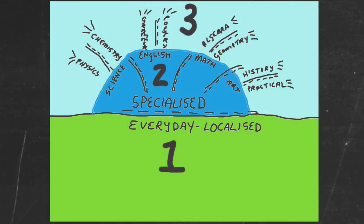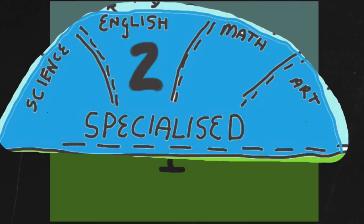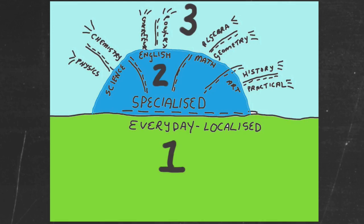They argue that the two need to come together to breathe and give life and shape to each other. The first question enters into the intricacies of that debate and shows you how to analyze the relationship between the everyday world and specialized knowledge. The second question hones in on the specialized world in its own terms — we ratchet the focus up away from the everyday and straight into the specialized, trying to understand the different kinds of specializations and how they relate to each other.